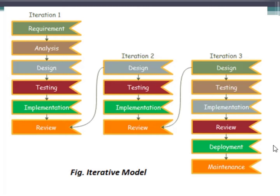The iterative model allows accessing the earlier phases in which the variations were made. So if we are talking about iteration 2, we will be taking the input from iteration 1, and so on. The final output of the product is reviewed at the end of the SDLC.